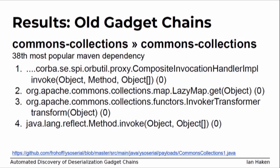It rediscovered the Commons Collections gadget chain. The reason this gadget chain was so interesting when Frohoff and Lawrence first discovered it is because it's the 38th most popular dependency — it's everywhere. Basically every application ends up pulling this in as some kind of transitive dependency. More or less what that gadget chain looks like: you wrap your object inside a dynamic proxy, get into an invocation handler, go to the Commons Collections lazy map, which does some reflection things and lets you basically call any method you want.